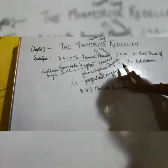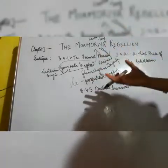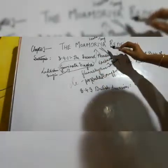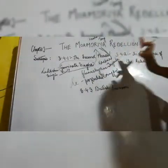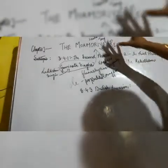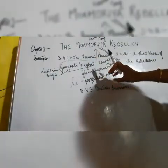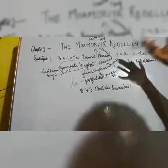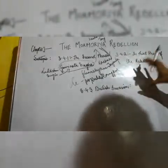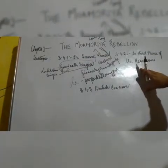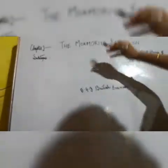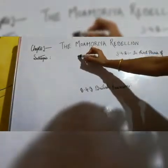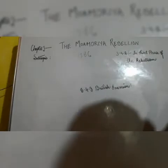The third phase of the Moamoria Rebellion took place because the Moamorias were thinking that the Ahom king had committed great atrocities upon them and they needed a good plan to attack the Ahoms again. Their desire for revenge was still very much alive. They got the opportunity in the year 1786, when they joined hands with the Tafala Bahatias.